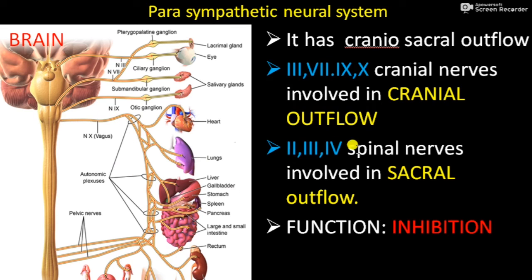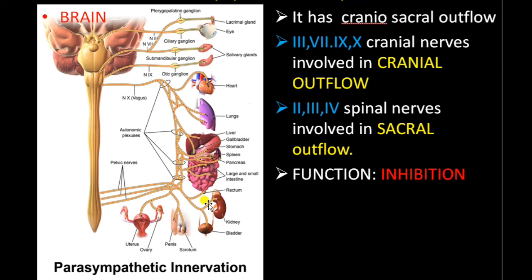The branches of the preganglionic fibers of the vagus nerve form plexuses and innervate the thoracic and abdominal organs — the lungs, heart, and digestive organs. The second, third, and fourth sacral spinal nerves are involved in the sacral outflow, forming a pelvic plexus. From this plexus, nerves arise and terminate in terminal ganglia, from which postganglionic neurons innervate the kidneys, urinary bladder, and reproductive organs.